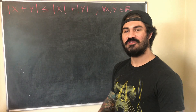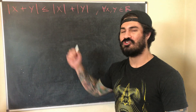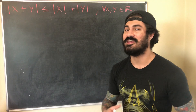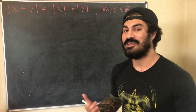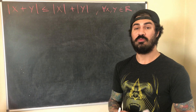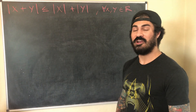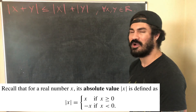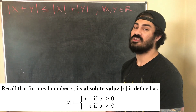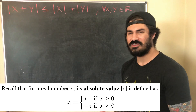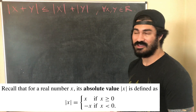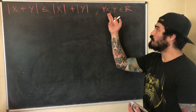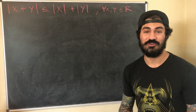Now we'll do one more example: we're going to prove the triangle inequality. Before we start, there are a couple of preliminaries. First, we need the formal definition of absolute value. Second, the triangle inequality holds for all x and y in the set of real numbers, so we're no longer dealing with just integers where we can separate into even and odd.